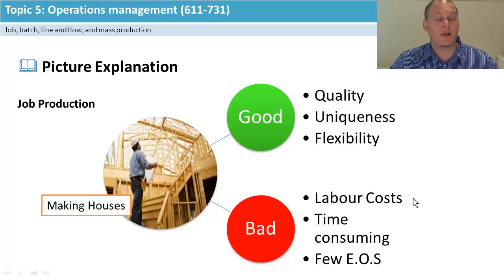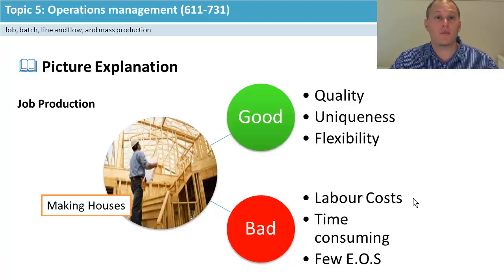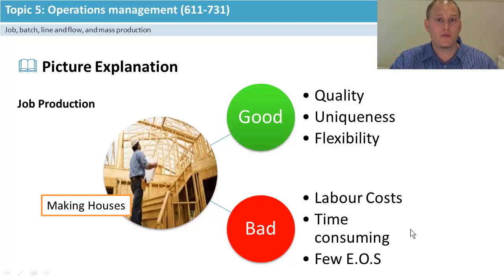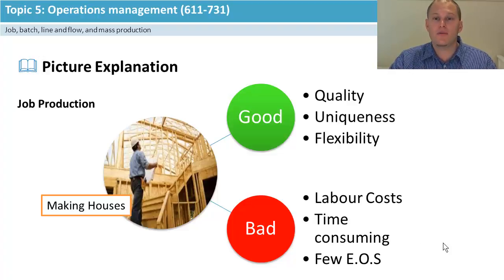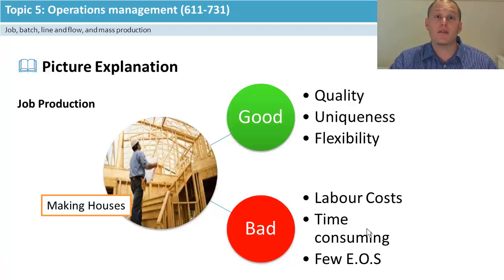The disadvantages: if you're paying for uniqueness and quality you're going to have big labor costs — a lot of total fixed costs and potentially total variable costs — which will change your break-even point. It can also be very time-consuming, giving workers a lot of time to make it happen. Overall you get fewer economies of scale, so the unit cost doesn't have much benefit from the main five.